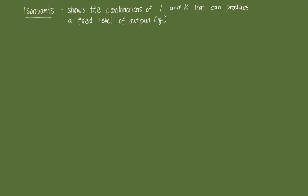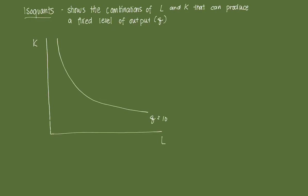And it looks something like this. We have K on the y-axis — that's the amount of capital or machines employed — and L (labor) on the x-axis. An isoquant looks similar to an indifference curve. For example, this curve represents Q equal to 10, and this one Q equal to 20. So that's an example of an isoquant.